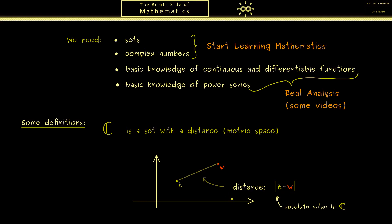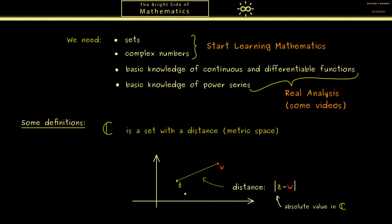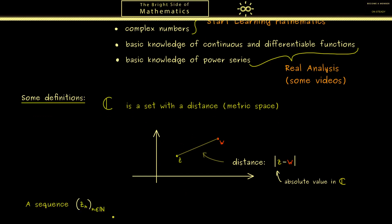Now such a notion of a distance is important. Because with a distance we can say what a convergent sequence is, what limits are and so on. Otherwise we wouldn't be able to say that the sequence gets closer and closer to a given point. Indeed we have to measure this closeness. Hence now we are able to talk about sequences of complex numbers and convergent sequences.